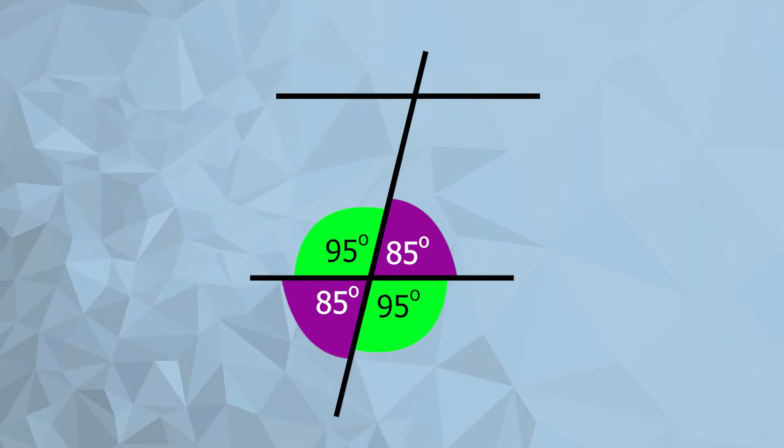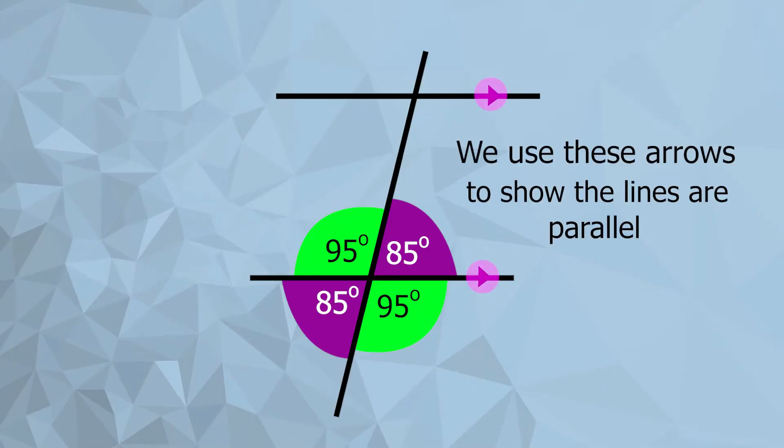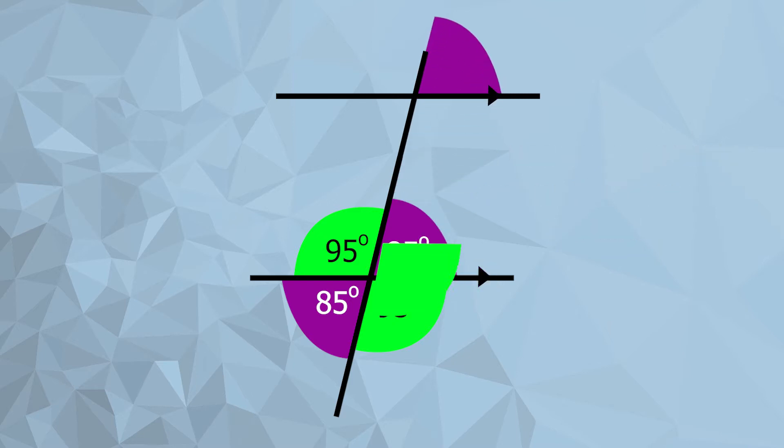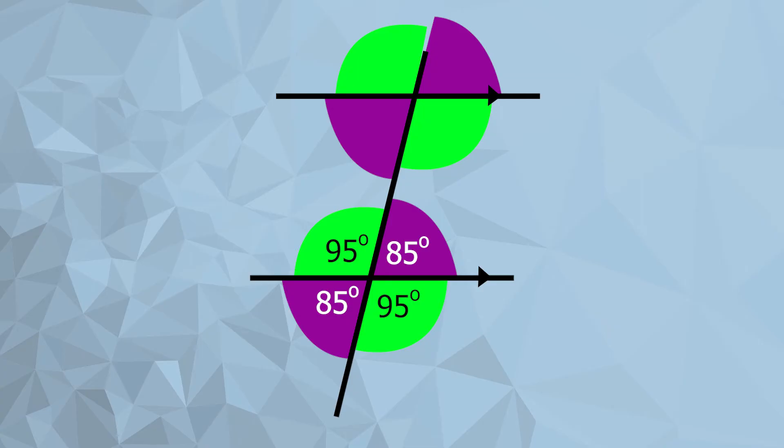If we take two intersecting lines and we know one of those angles, it's really easy to find the other three angles. Now imagine we're going to copy and paste that horizontal line and replicate a second version of it, just moving it up slightly. The angles created on that new line are going to be exactly the same as the angles at the bottom, because it is just an exact replica of that first line.